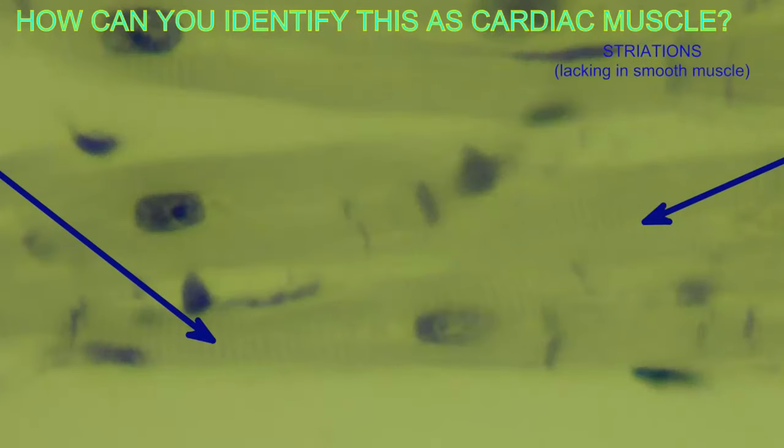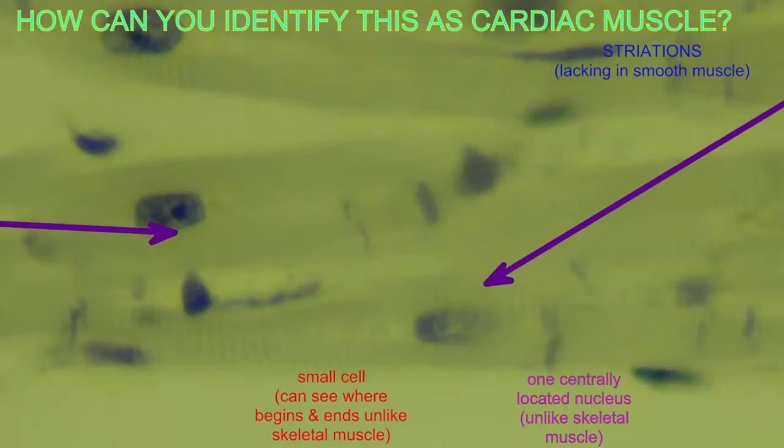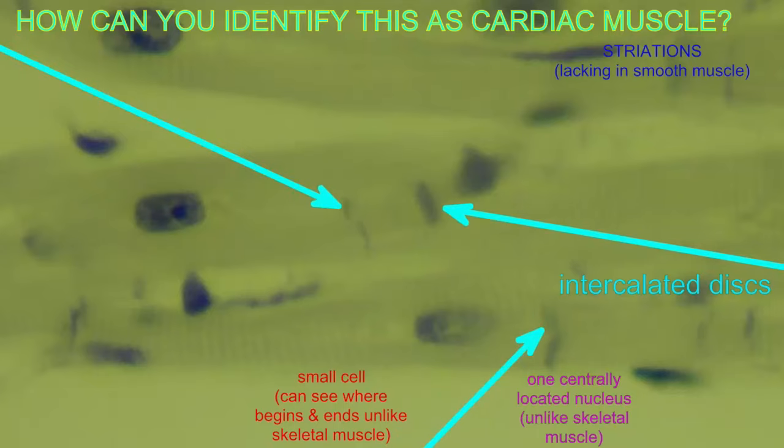Because heart muscle generates such pressure when the heart contracts, these cells need to be firmly attached to each other. So where cardiac cells meet, there are thickenings, intercalated discs.